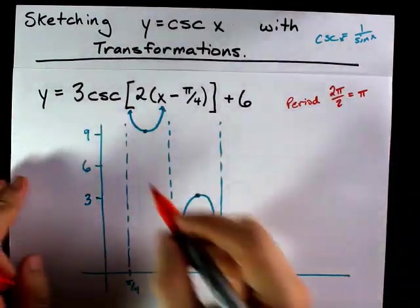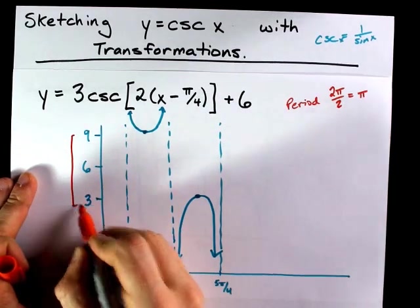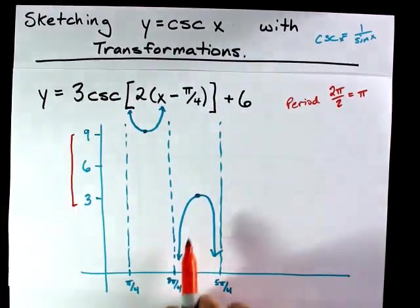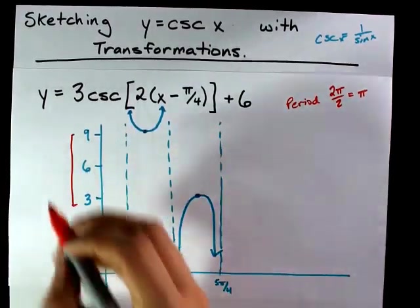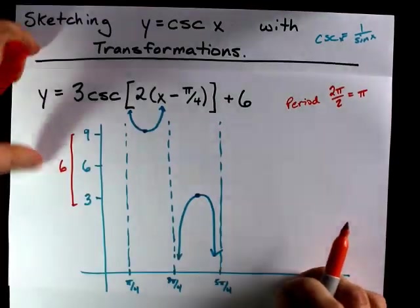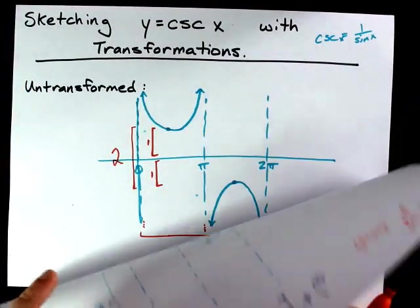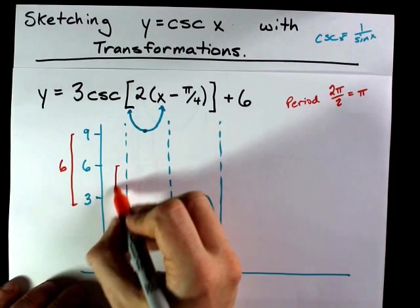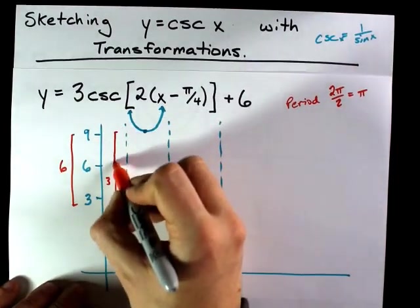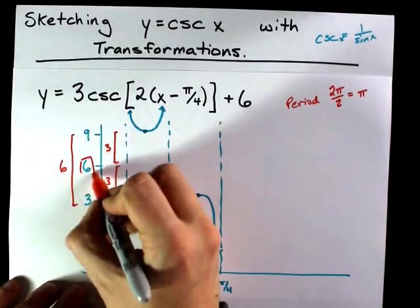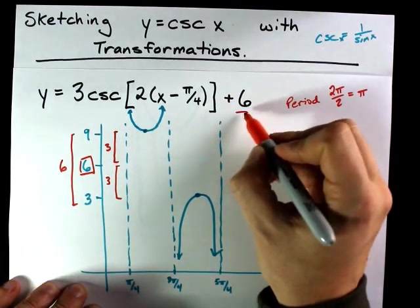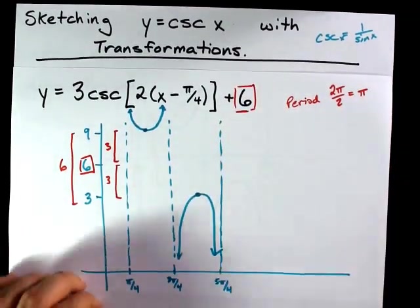Let me just emphasize that the difference between the local maximum and minimum here was 6, 3 times larger than the original 2. And that represented 3 above and 3 below the vertical middle. That vertical middle being that positive 6 here.